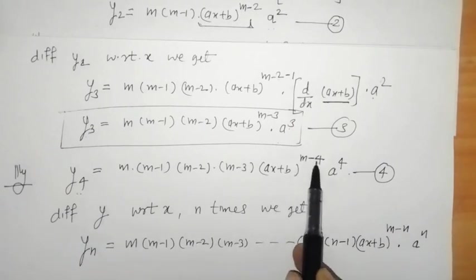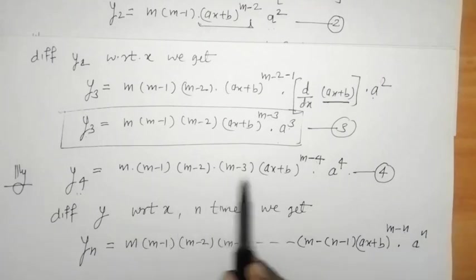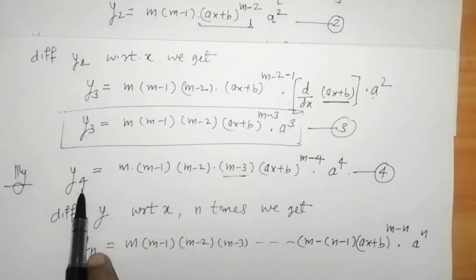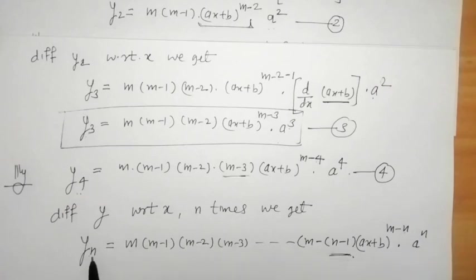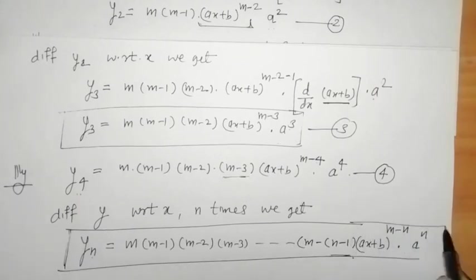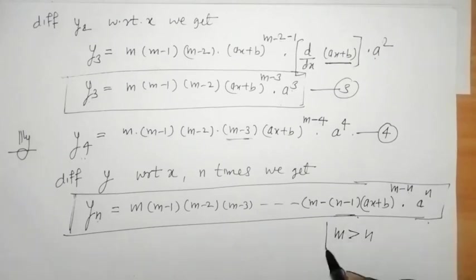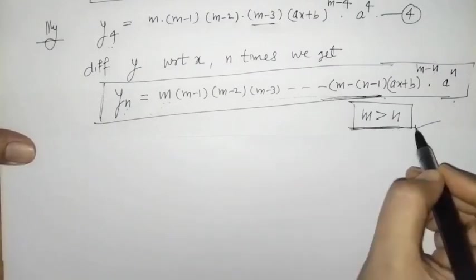When y4 has power (m−4), for yn we write power (m−n). When y4 has a⁴, for yn we write a^n. In y4 the last factor is (m−3), which is one less than 4, so for yn we write up to (m−n+1). This nth derivative formula holds under the condition that m is greater than n.